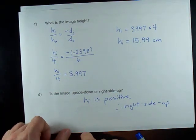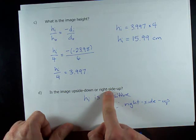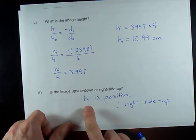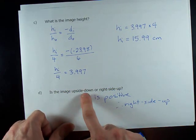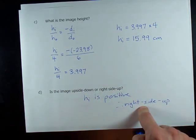A positive height of image is right side up. A negative H_I is upside down. Here, it was positive. So, it was right side up.